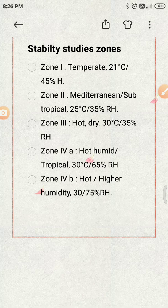India falls under Zone 3 and Zone 4B, with temperature at 30 degrees Celsius for both zones. The relative humidity varies slightly, ranging from 35 percent to 75 percent across these two zones.